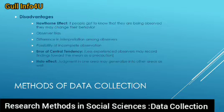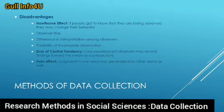Disadvantages of the observation method: First, the Hawthorne effect — a social phenomenon where if people know they are being observed they may change their behavior; under the camera your natural behavior is not shown. Second, observer bias — difference in interpretation among observers; each observer sees things through their own mindset. Third, possibility of incomplete observation — since observation requires focused attention, each person's attention span is different, so their observation may be incomplete.